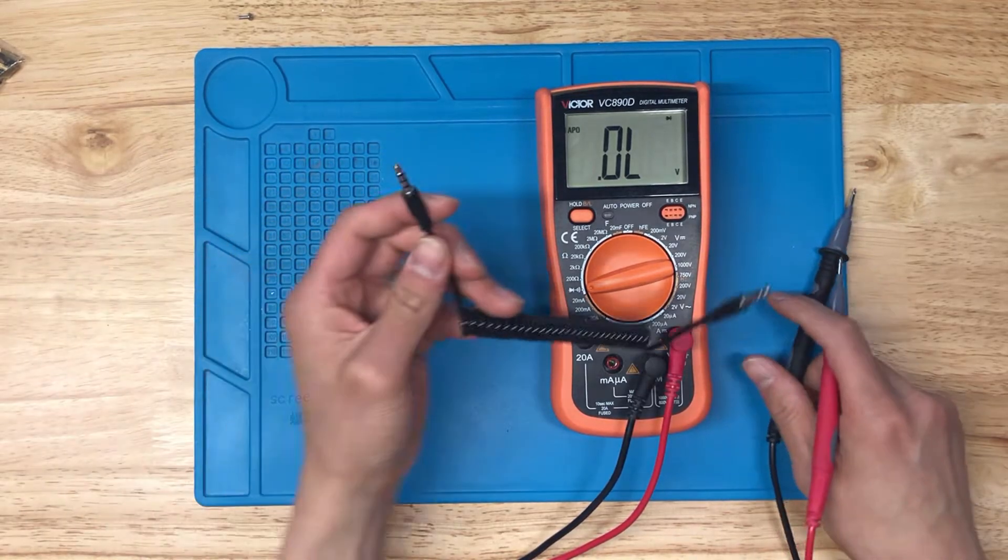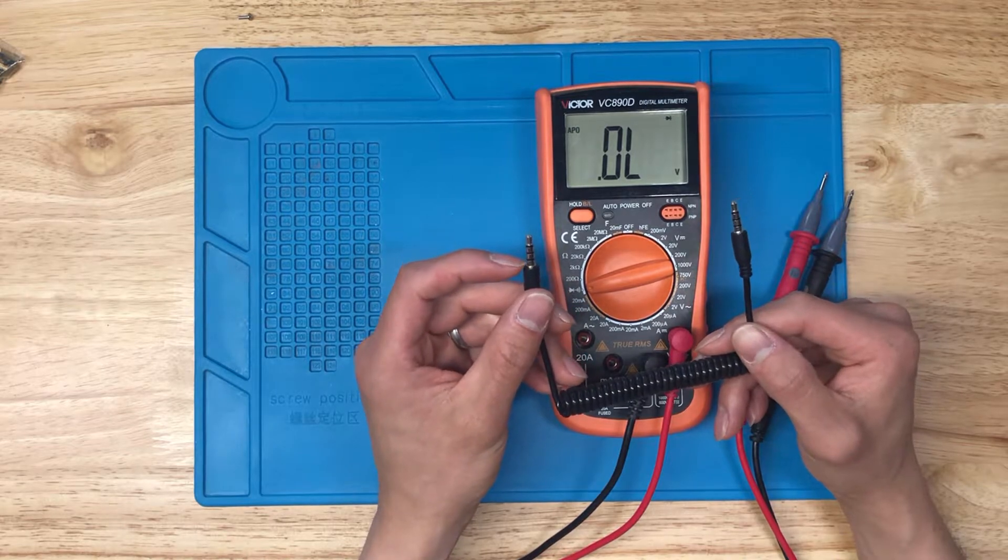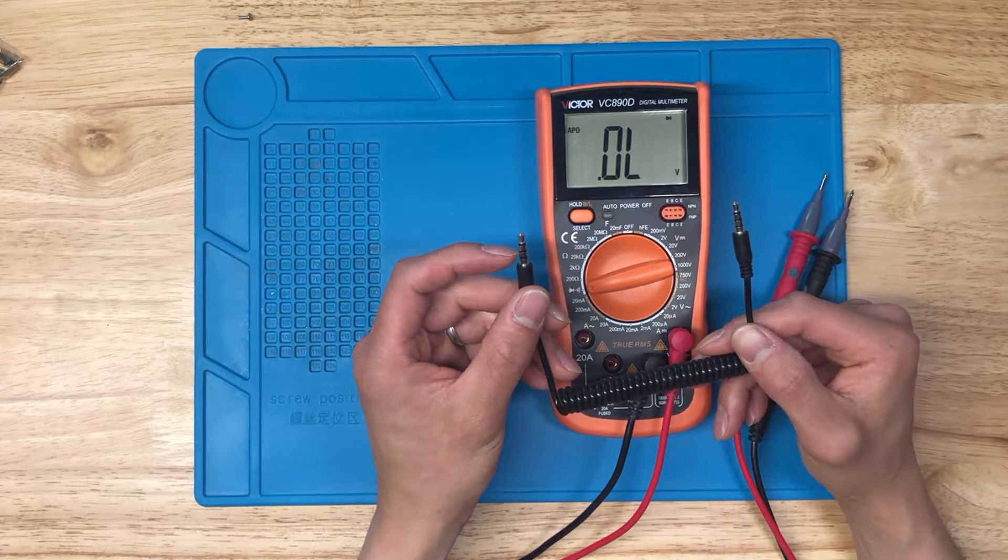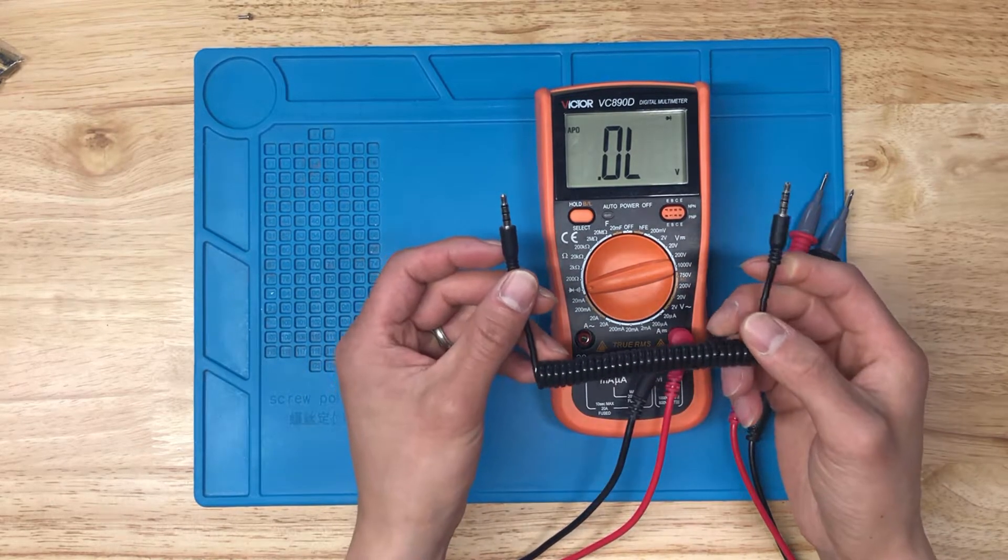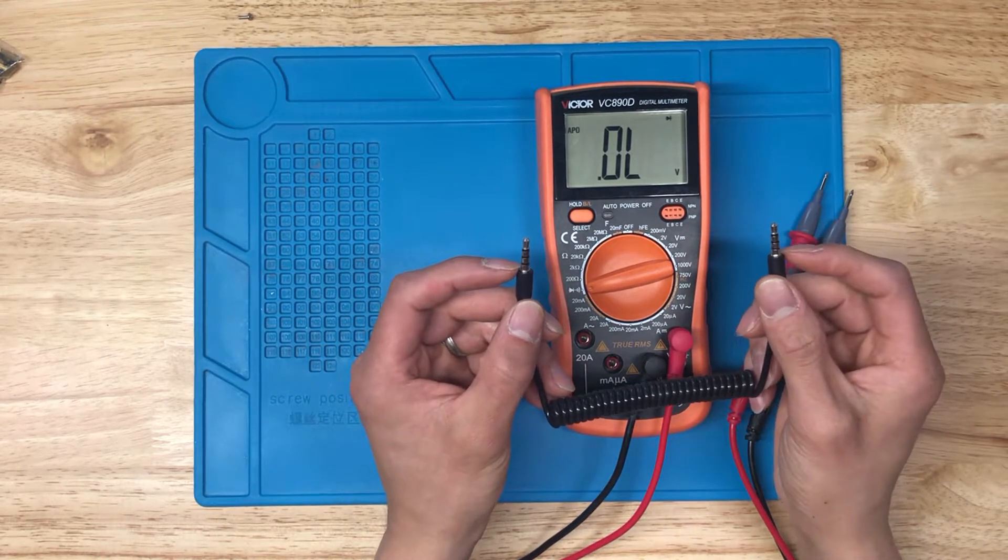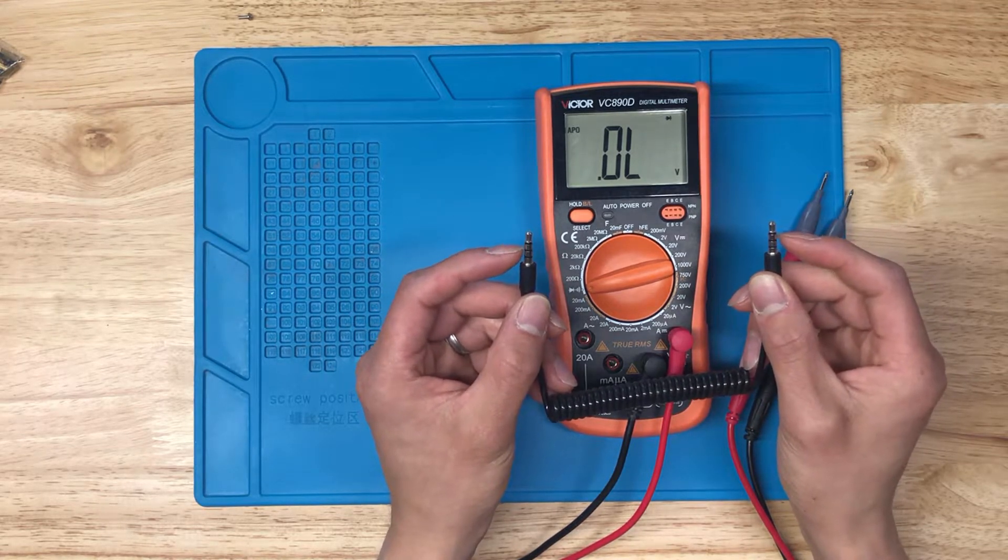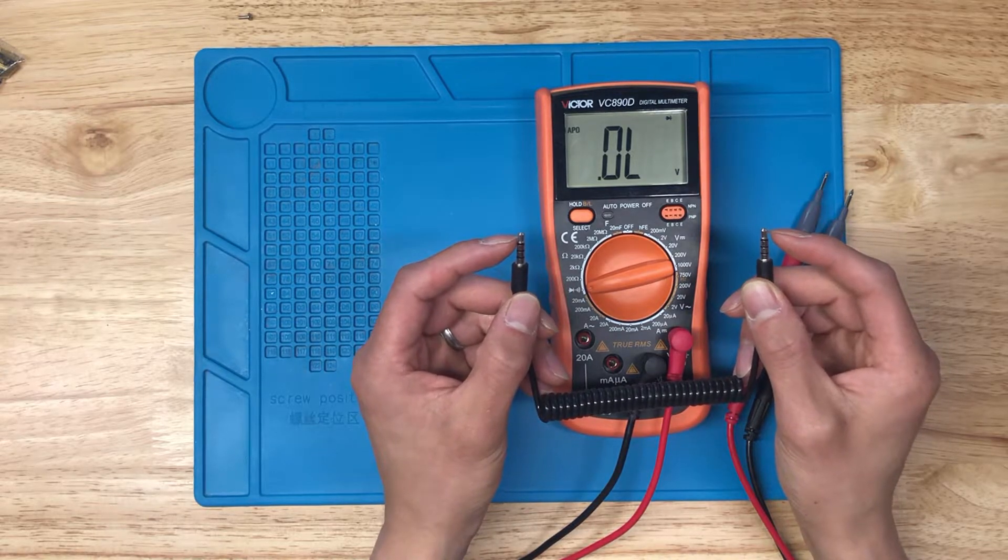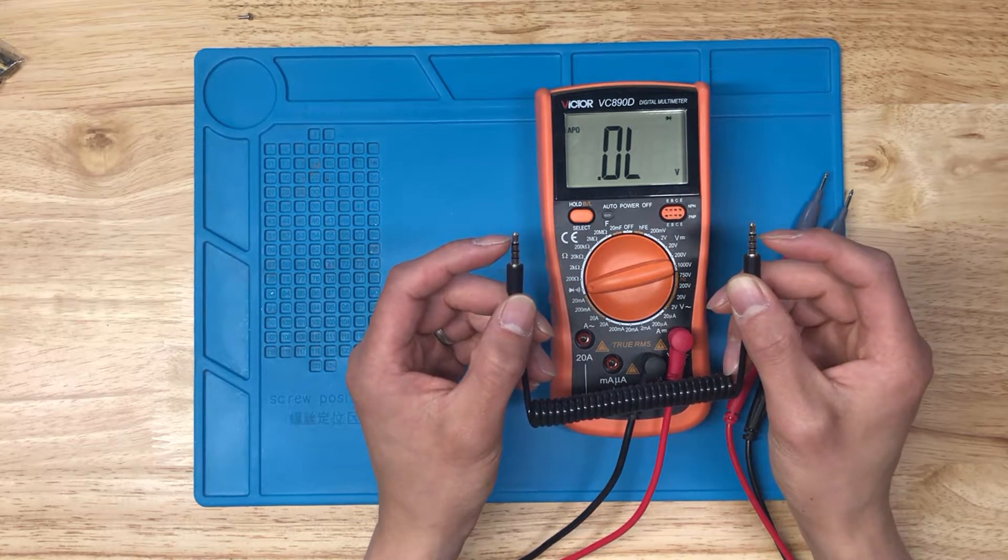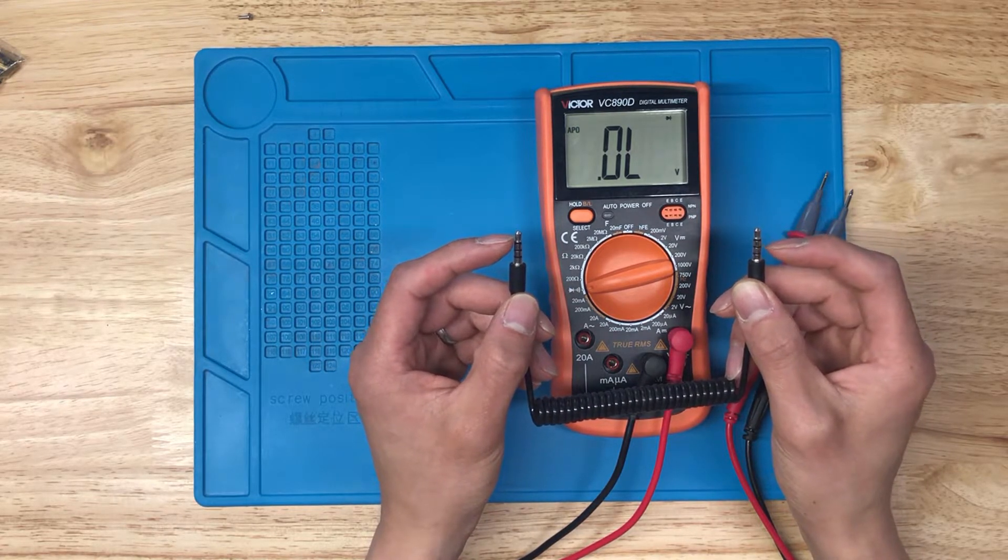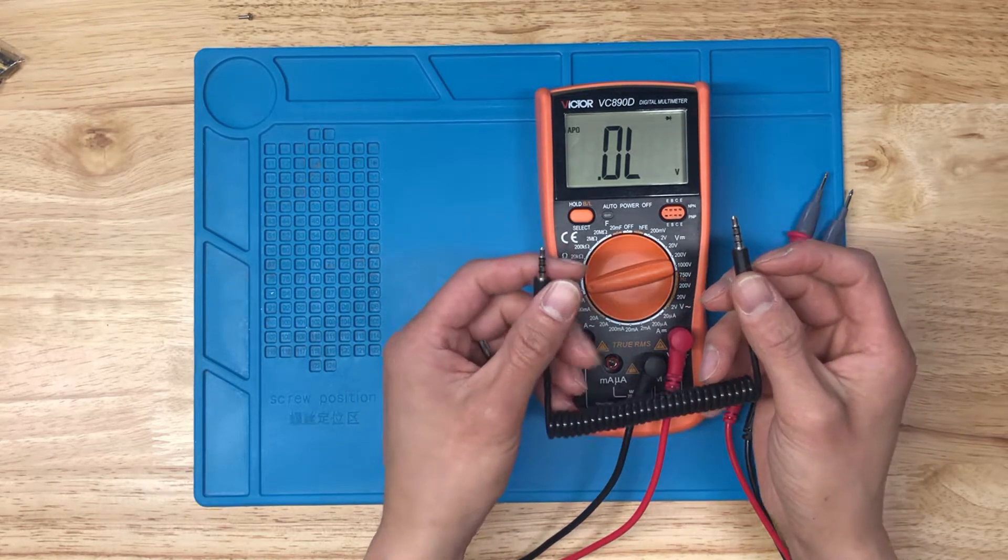So what we want to do here is for this TRS cable, there's four different connectors on here. The sleeve, ring, another ring, and the tip. Between both halves of this cable, the sleeves are connected together, this ring is connected together with the other ring, this ring here is connected to the other ring, and then this tip is connected with the other tip. There should be no cross-talk, so this tip in no way should have any kind of resistance with the rings or the sleeves.